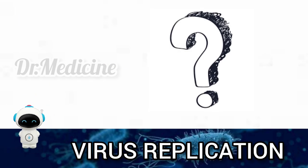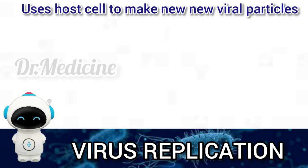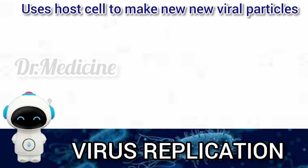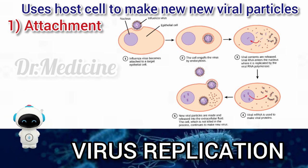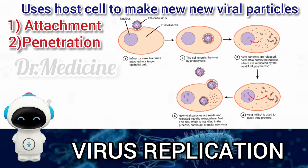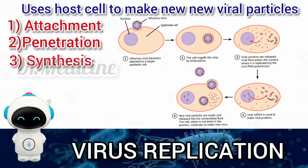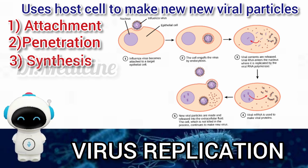Do you know how viruses replicate? Viruses usually use their host cell to make new viral particles. It includes five steps. Step one: attachment — the virus attaches to the host cell by sticking to receptors on the cell surface. Step two: penetration — the viral genetic material enters the host cell by engulfing or injecting. Step three: synthesis — the virus produces lots of copies of genetic material in the host cell, and the host cell provides all needed materials.